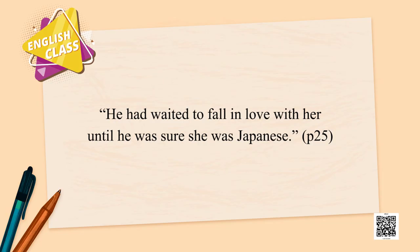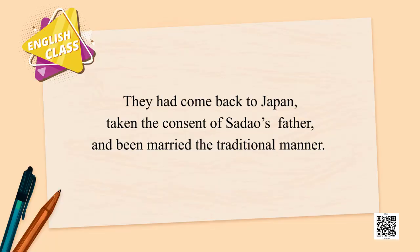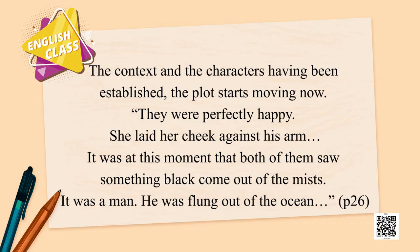He found this Japanese girl and fell in love with her. A very interesting quote from the text: 'He had waited to fall in love with her until he was sure she was Japanese.' This shows how traditional Sadao is — despite being trained in the most modern surgery, he wanted to make sure she was pure-blood Japanese and knew all the Japanese traditions. They came back to Japan, took the consent of Sadao's father, and were married in the traditional manner.